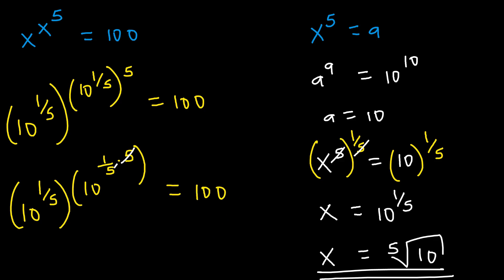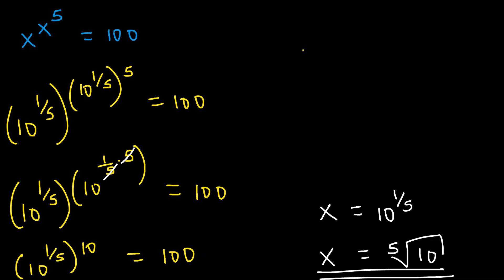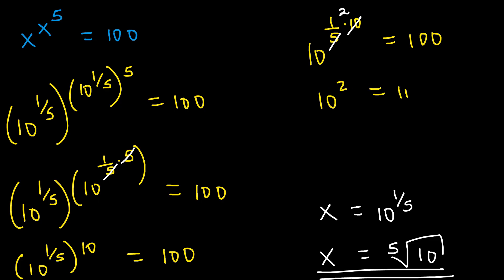Now this 5 will cancel with that, and so we remain with 10 to the power of 1 over 5, raised to the power of 10, which should equal 100. This is the same as 10 to the power of 1 over 5 times 10, equaling to 100. Now 10 divided by 5 is 2, so this will be 10 to the power of 2, equaling to 100. And so 100 equals 100.